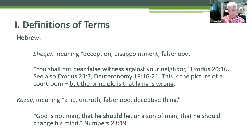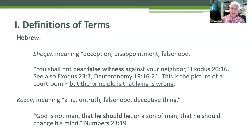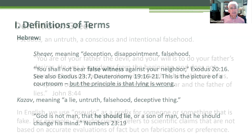Moses was told by God to tell the people of Israel: God is not man, that he should lie, or a son of man, that he should change his mind. And so once again, we are made in his image and therefore we are to think truth and speak truth just the way he does.